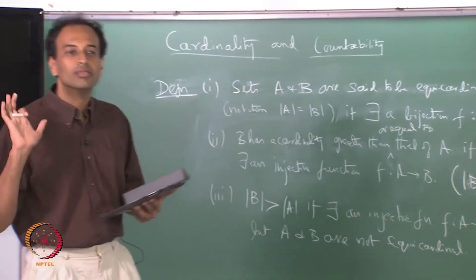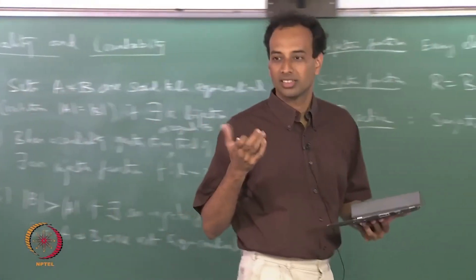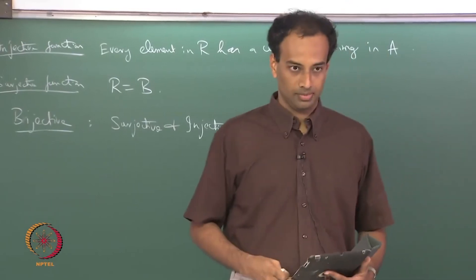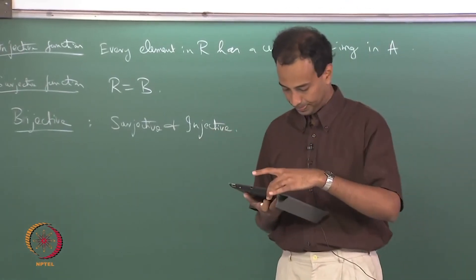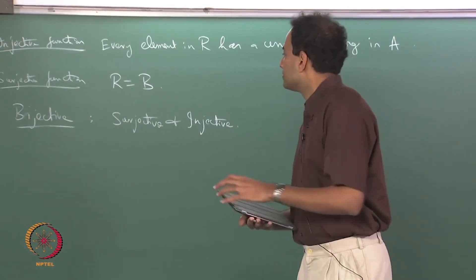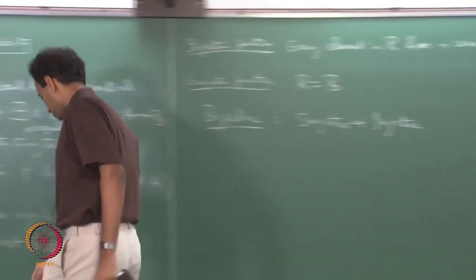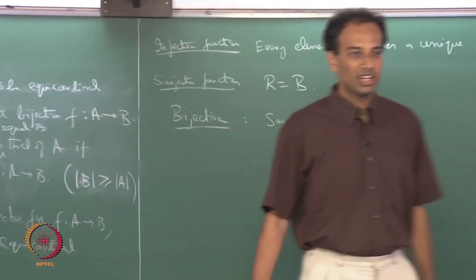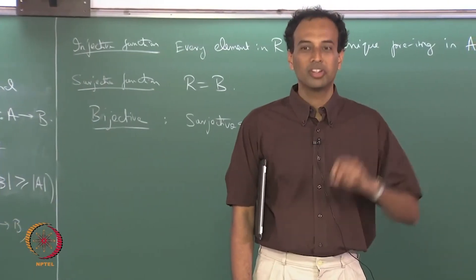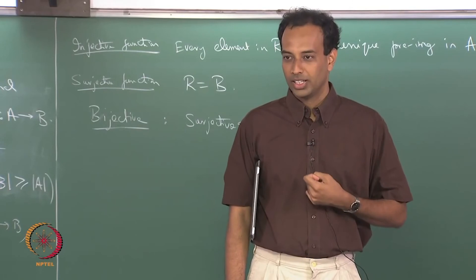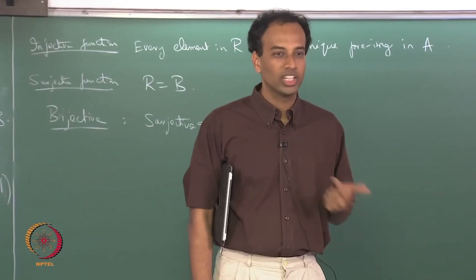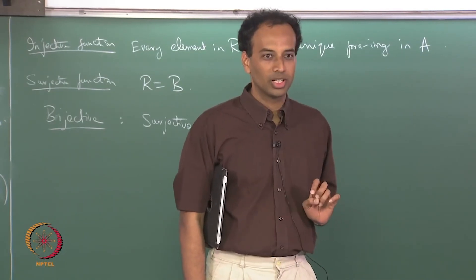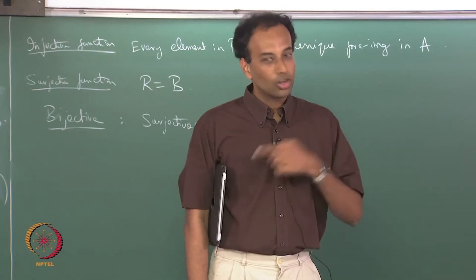This is how you compare sets for cardinality, even infinite sets — this framework allows comparing sizes of sets with infinitely many elements. Sets with infinite elements can also be of different sizes in this sense. Not all infinities are born equal; there are bigger infinities and smaller infinities in terms of cardinality.